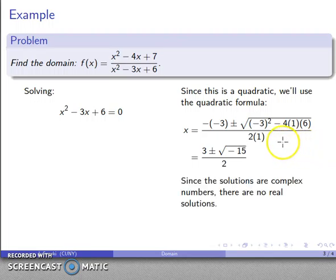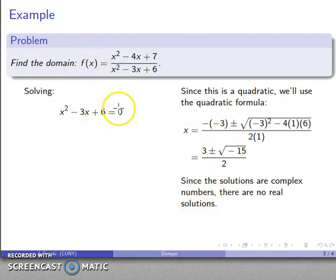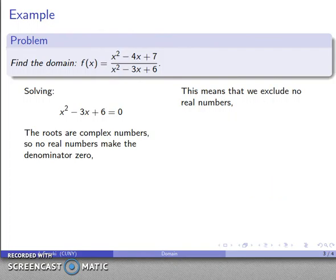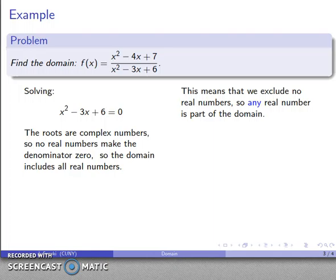It turns out the solutions in this case are complex numbers, and we're only concerned with functions of real variables. So since the only values that make our quadratic equal to zero are complex numbers, no real number will make the denominator zero — no real number gives us a problem. So none of the real numbers have to be excluded, and any real number is part of the domain.